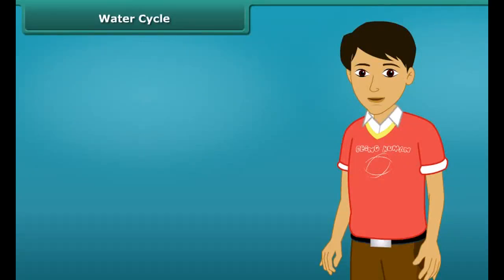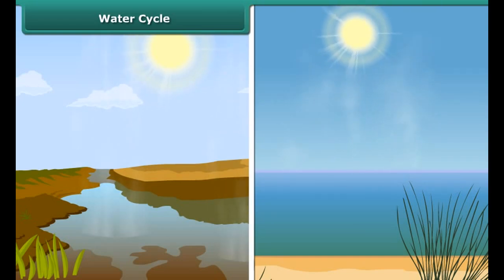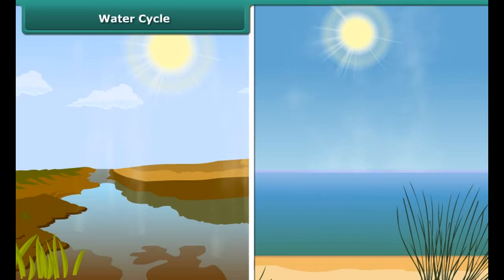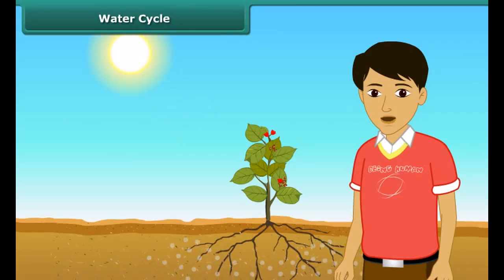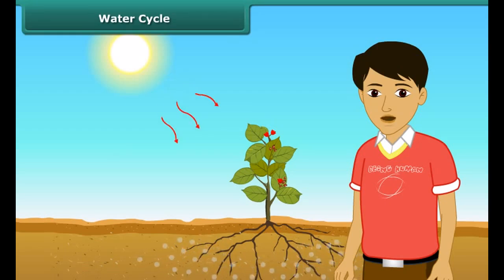Water in oceans, seas, rivers etc. gets heated up by the sun and turns into vapor. This process is known as evaporation. Plants absorb water from the soil; they use a part of this water to prepare their food and release the excess water into the air as water vapor.